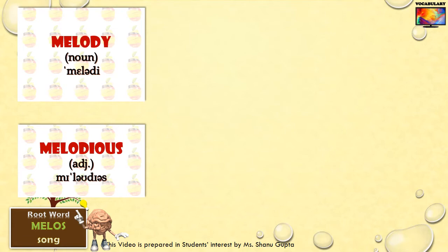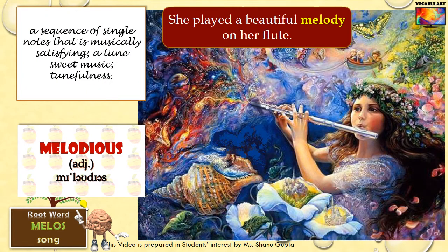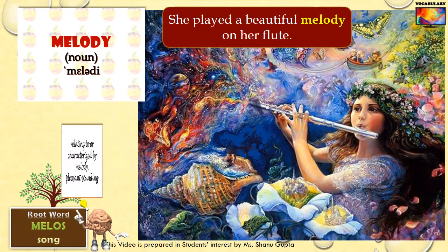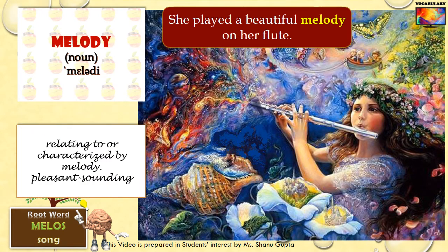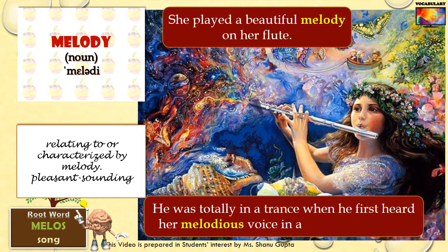Now we move on to our second root mellow, which means song. Recall the common word melody, which means sweet music or tunefulness. In this picture, you can see a girl playing a beautiful melody on her flute. While melody is a noun, melodious is a related adjective describing something that is pleasant sounding. For instance: He was totally in a trance when he first heard her melodious voice in a solo performance.